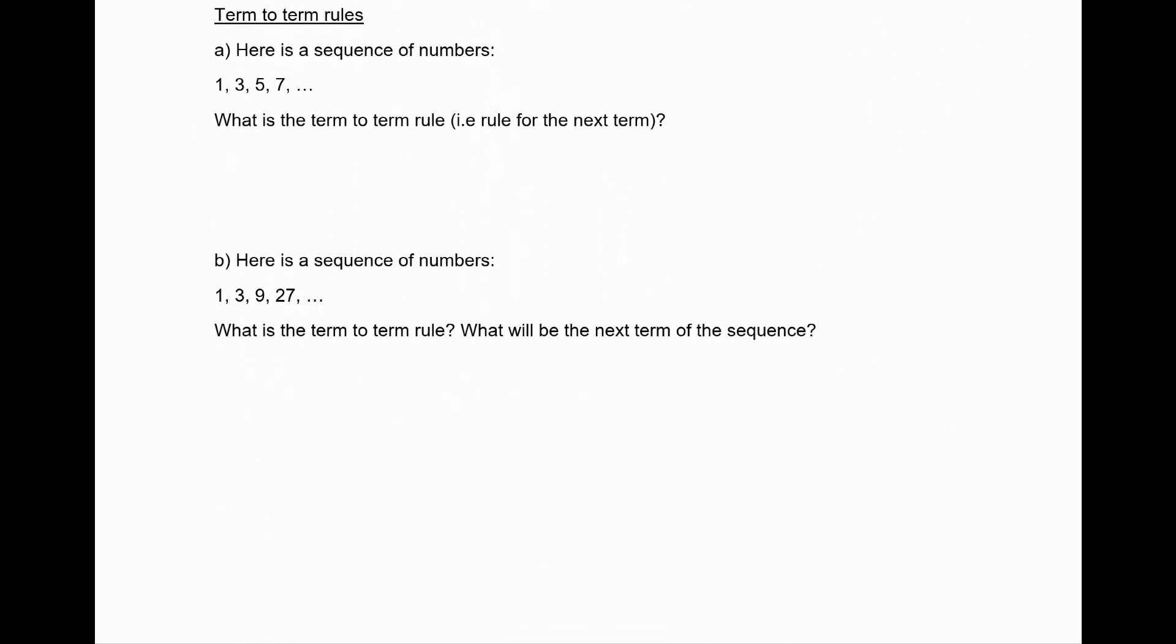It's very important that we know what a term-to-term rule is. All this is, is the rule which takes us from one term in a sequence to the next term. We have the sequence of numbers 1, 3, 5, 7, and so on. What is the term-to-term rule? We can say that the term-to-term rule in words is that we add 2. Because to get from 1 to 3 we add 2, from 3 to 5 we add 2, 5 to 7 we add 2, and so on. So we can say add 2, or in symbols, plus 2.